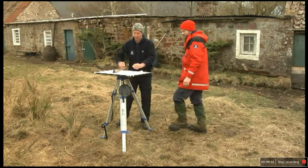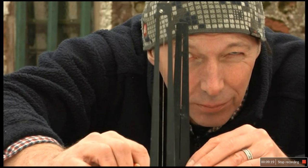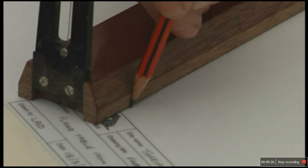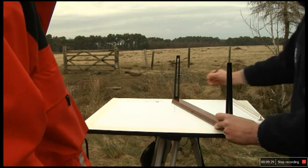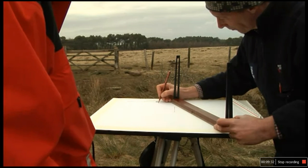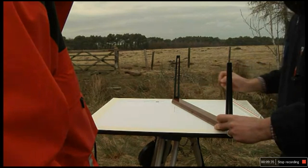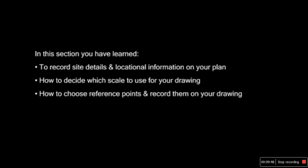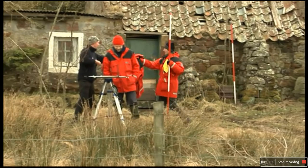To mark a reference point, begin by sighting through the alidate. Keep the alidate pressed against the pin in the centre of the board and move it around until the two sides line up with your point. Then, near the edge of your page — away from where your plan will be — draw a ray along the side of the alidate closest to the pin.